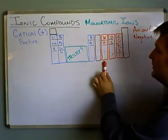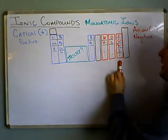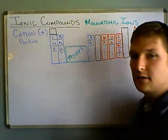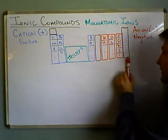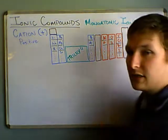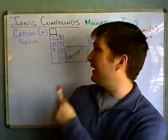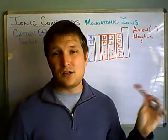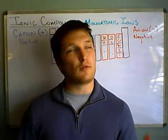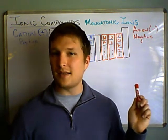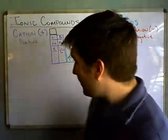Everything from Group 5A, 6A, and 7A — they like to gain electrons and become negative, and we call those anions. Over here we have the noble gases. They don't like to do anything; they're happy the way they are. We're going to go into why that is when we talk about electronic configurations, but for right now let's just memorize these trends.